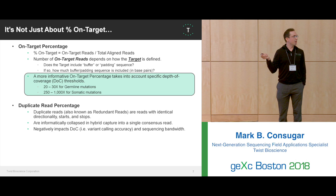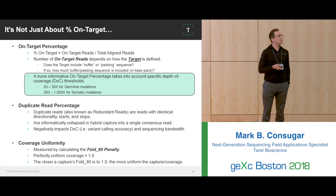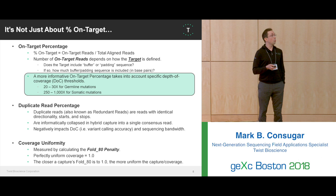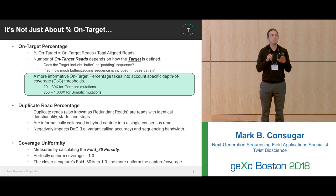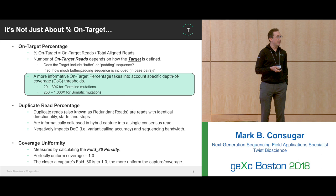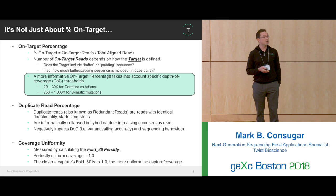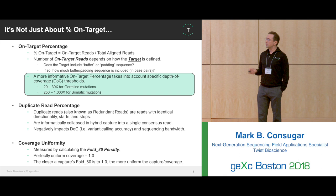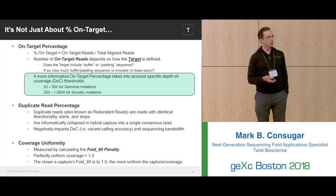Duplicate reads are primarily impacted by PCR duplicates. And lastly, coverage uniformity: the most uniform coverage has the least stochasticity in its representation and best utilizes the bandwidth of your sequencer. One way to calculate this is the fold 80 penalty, a Picard metric championed by the Broad Institute. Twist uses this to compare our capture to other vendors. Perfect uniformity — which isn't a reality — would be a value of one, but the closer you get to one, the more uniform your capture and sequencing.